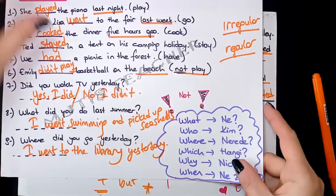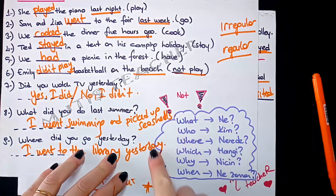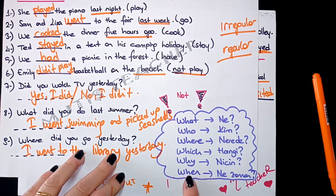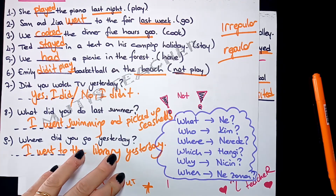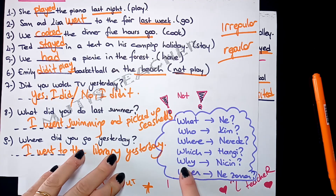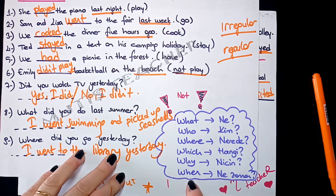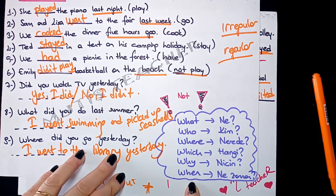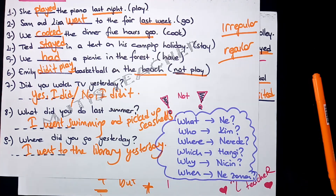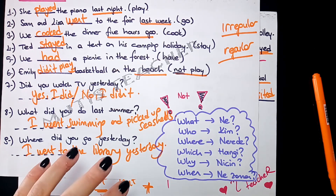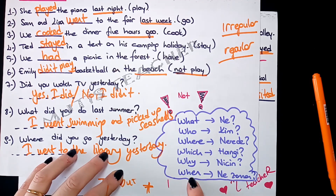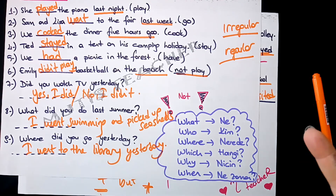WH sorularını sık sık tekrarlayın, çok önemli: What (ne?), who (kim?), where (nerede?), which (hangi?), why (niçin?), when (ne zaman?). When sorusunun cevabı bir gün veya mevsim olur: on Saturday, in summer gibi. When'in cevabı hiçbir zaman saat olmaz — saatten bahsediyorsak soru mutlaka 'what time' olur, when değil.